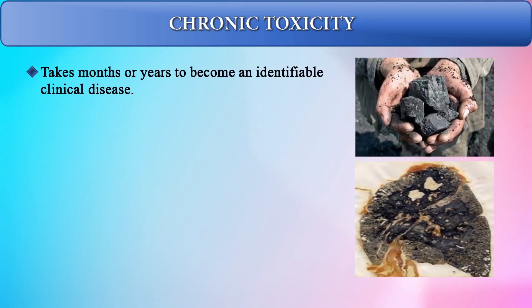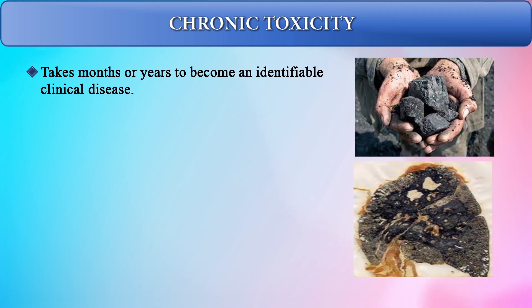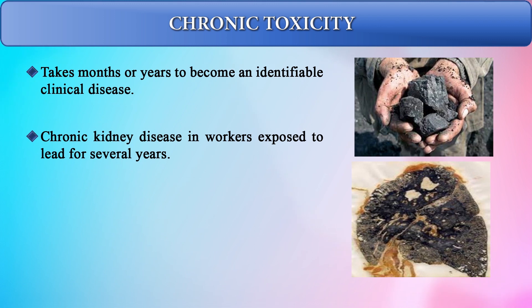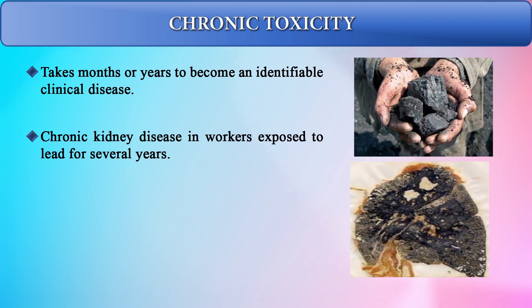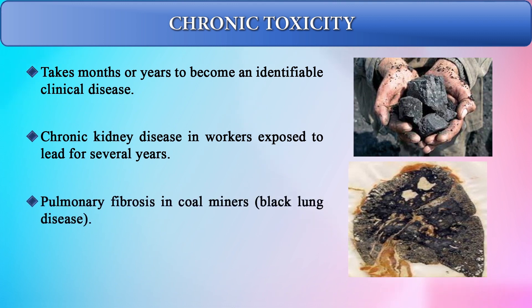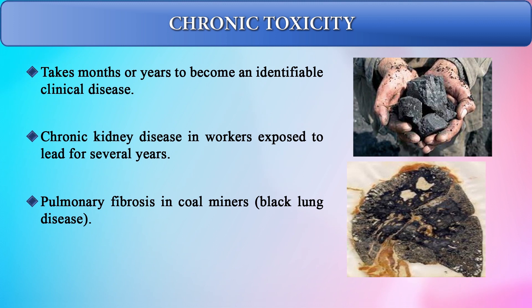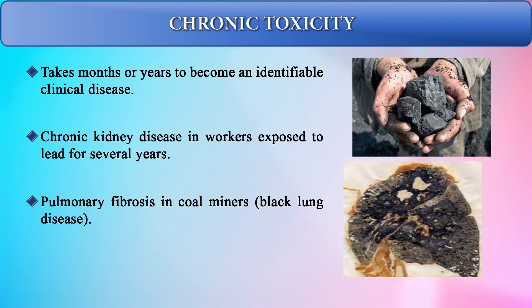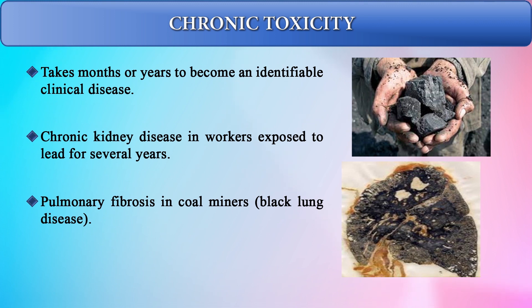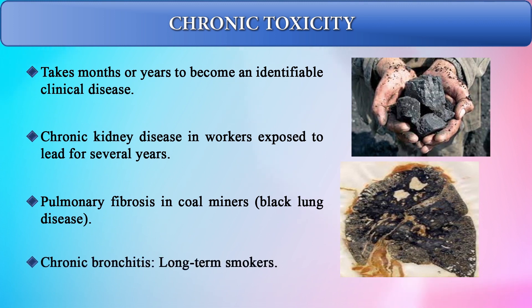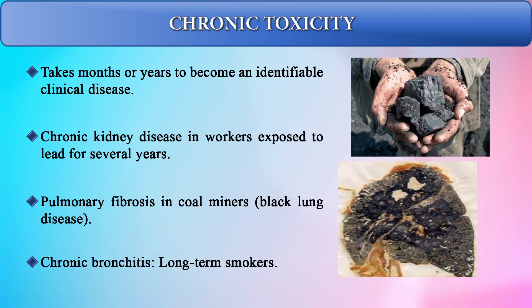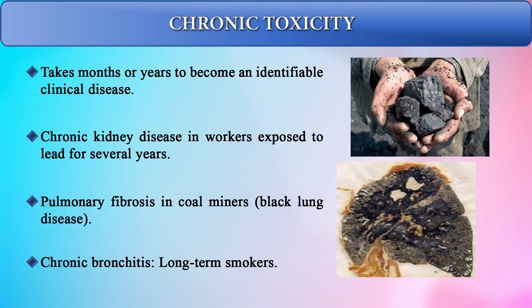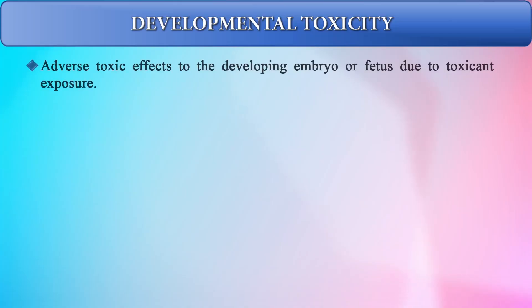Chronic toxicity is normally observed in industrial workers and takes months to years to become an identifiable clinical disease. Chronic kidney disease develops in workers exposed to lead for several years. In coal mining, workers develop pulmonary fibrosis, also referred to as black lung disease. The coal miner's lung appears similar to the lungs of long-term chronic bronchitic smokers.